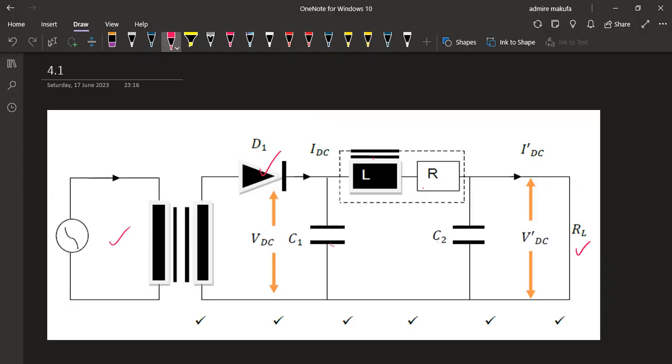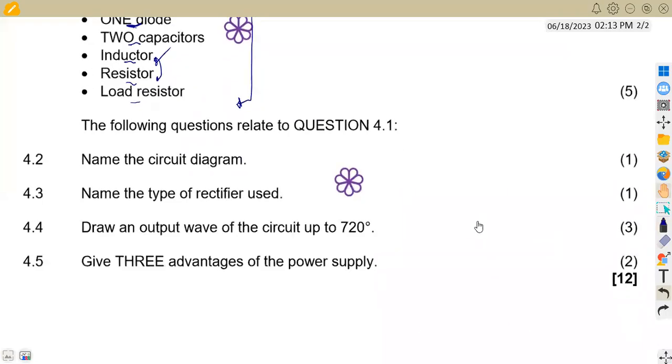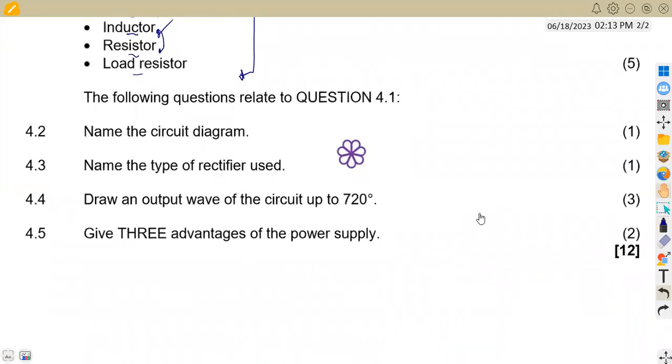Let us check the second part of our question, which is question 4.2. Name the circuit diagram. As we've been talking about already, this is an LC pi filter.